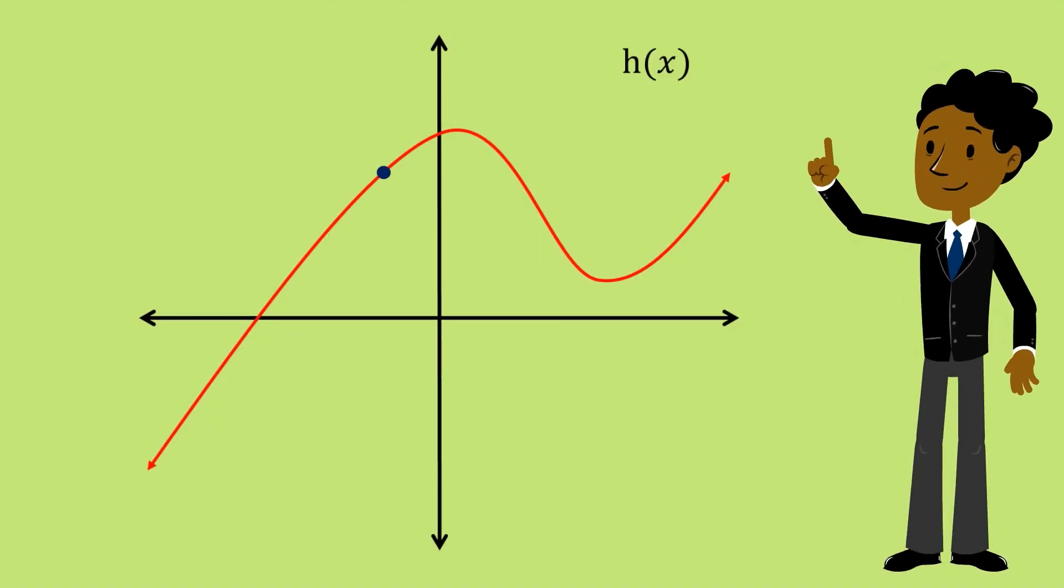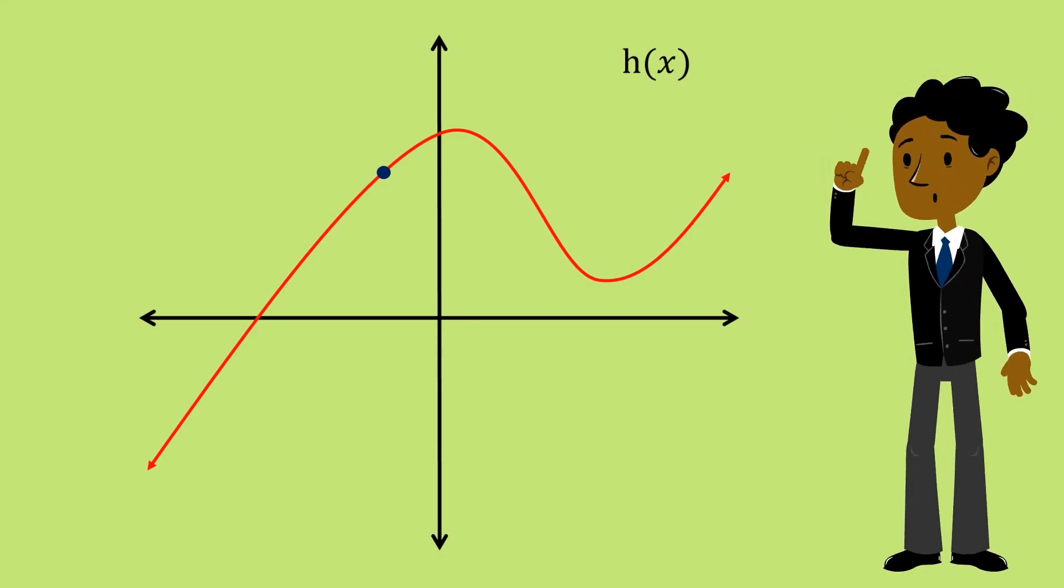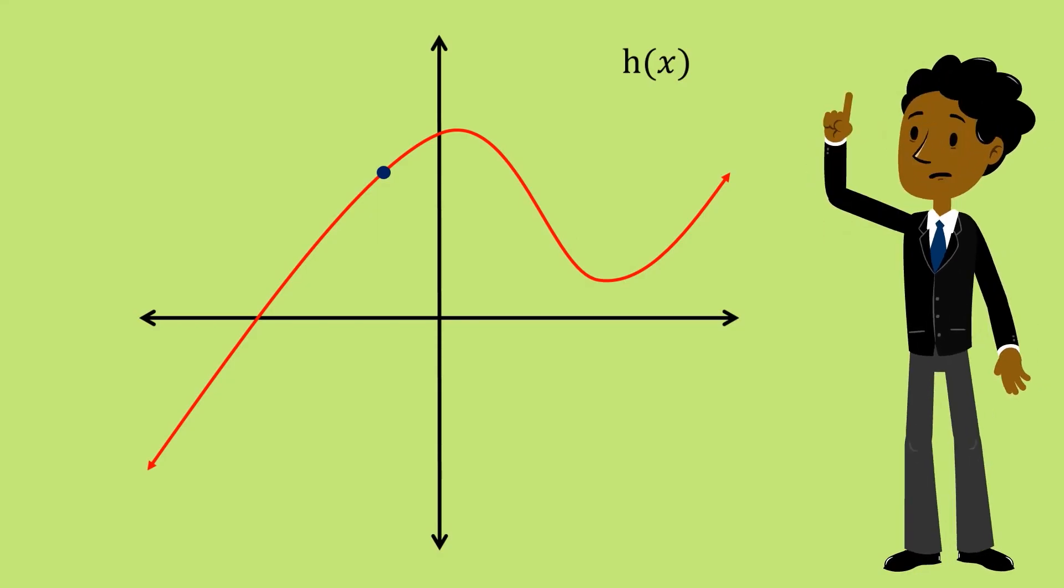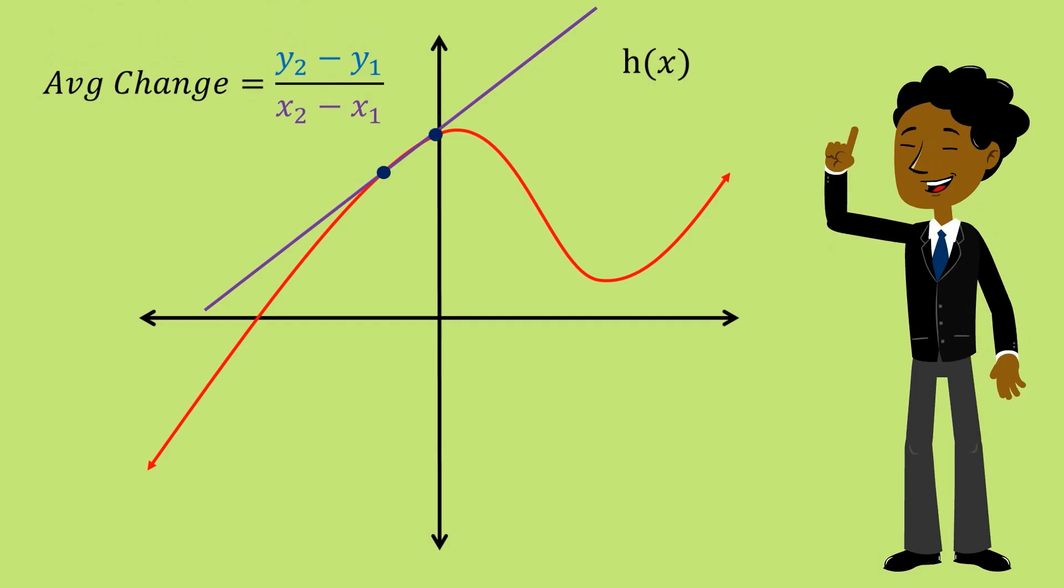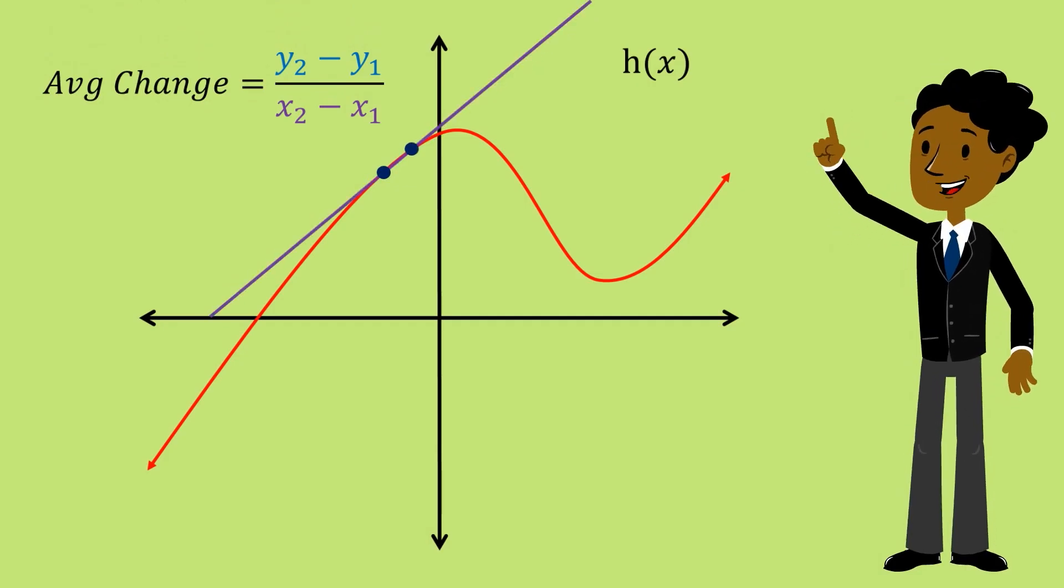For now it's good to recognize that even without the limit we can still get a very good idea how the function is changing at a single point. We simply use our average rate of change and then move our points closer and closer together so we can find that limiting value.